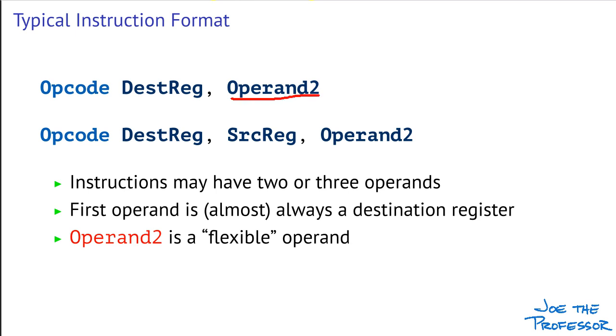The last operand, which would be the second operand for a two-operand instruction, or the third operand for a three-operand instruction, is considered a flexible operand. By that we mean that it can have several forms. The two most common forms for the flexible operand will be either to specify another register or to provide a small fixed constant that can be used in the instruction.